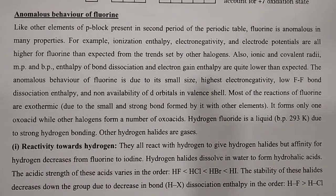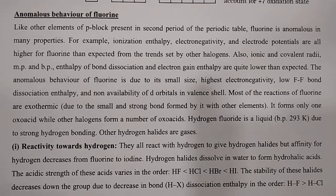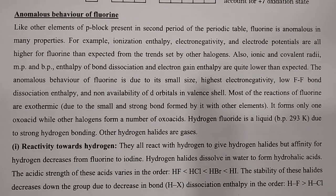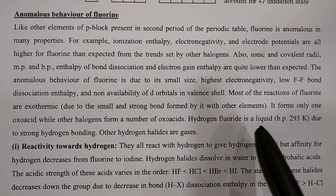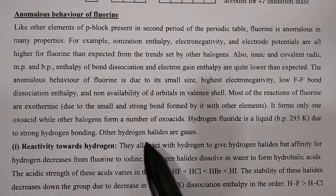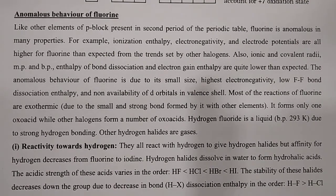Most reactions of fluorine are exothermic — a tremendous amount of heat is released due to small and strong bond formation. Some reactions are so vigorous that they cannot be carried out in glass vessels because fluorine can melt glass; therefore, special polymeric materials are used. Fluorine forms only one oxo acid, while other halogens form a number of oxo acids. Hydrogen fluoride exists as a liquid with boiling point 293 K due to strong hydrogen bonding, while other hydrogen halides are in gaseous form.